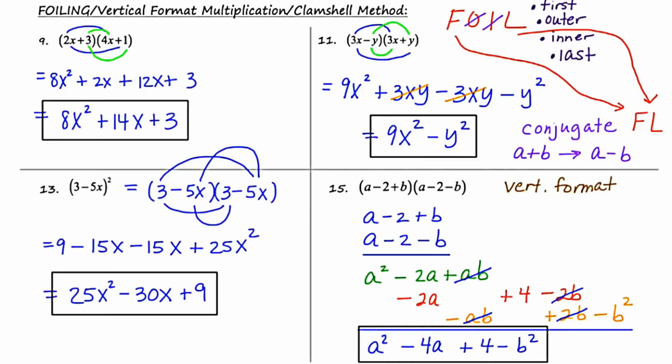In that last example, students always wonder how to write the answer in descending exponential order when there are two variables each with their own exponents. This one's a little tougher — I'm pretty relaxed when there are multiple variables within the product. This answer is fine as is; it's descending for the a's, with the b squared at the end. You really just have to ask your teacher how he or she wants the answer expressed. Let's move on to slide 3.